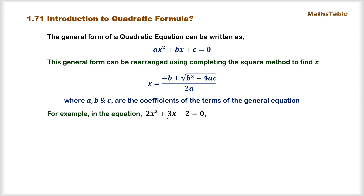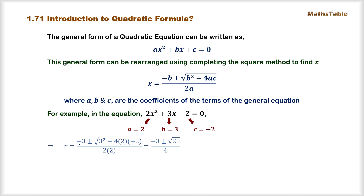For example, in the equation 2x² plus 3x minus 2 equal to 0, we can easily see that the coefficient of x², which is a, is 2; the value of b is 3; and the constant term c is minus 2. We simply substitute these values into the quadratic formula and solve the expression, either using a calculator or manually. In this way we get the two solutions: x equals 1 over 2, or x equals minus 2.